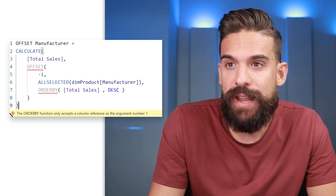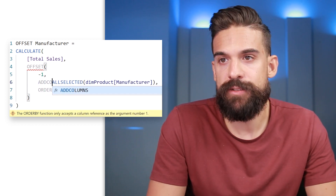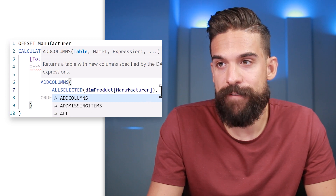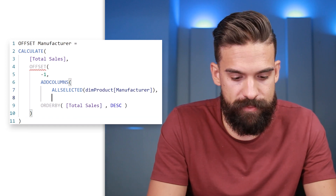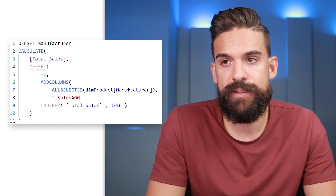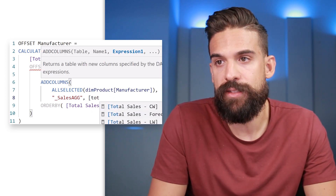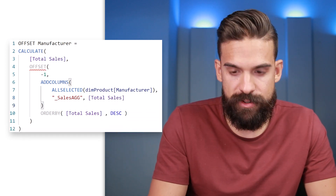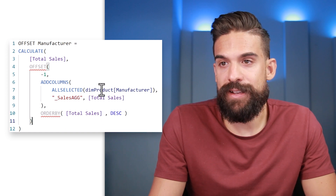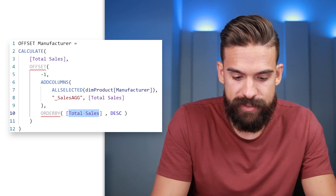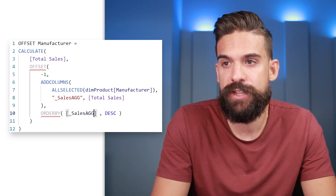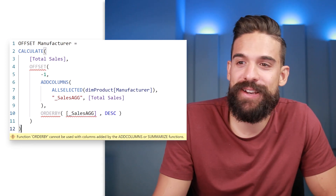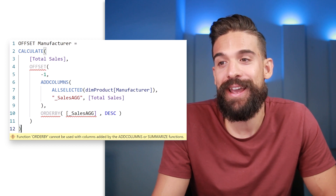The first workaround I thought of was using ADDCOLUMNS — creating a table with all manufacturers in the first column and aggregated sales in the second column using total sales. But that also doesn't work because ORDERBY cannot be used with columns added by ADDCOLUMNS or SUMMARIZE. So this is not a valid workaround either.